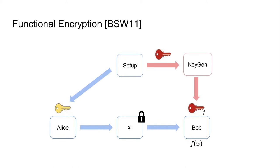A notion that allows for fine-grained access control is functional encryption, introduced by Boneh, Sahai, and Waters in 2011. In a functional encryption scheme, the setup algorithm outputs a master public key and a master secret key. The master public key can be used by Alice to encrypt a message. The master secret key is used not to directly decrypt ciphertexts, but to generate so-called functional keys. Every functional key is associated with a function F, and if Bob uses such a functional key to decrypt a ciphertext, he learns the function evaluation of F applied on the underlying message. Security ensures that Bob learns nothing beyond that specific function evaluation.